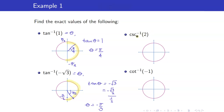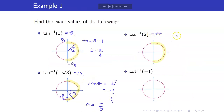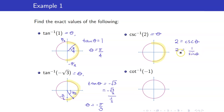Next, we want to evaluate cosecant inverse of 2. For cosecant inverse, the angle lies between negative pi over 2 and pi over 2. Let theta equal cosecant inverse of 2, so cosecant of theta equals 2. Writing this as 1 over sine theta, we get sine theta equals 1 half. This places us in the first quadrant, and the angle is pi over 6.